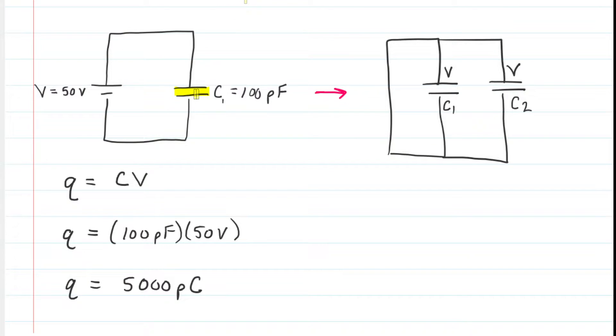We then take that capacitor, which we've labeled C1, and we move it into a new circuit. And this new circuit has another capacitor, C2, that's in parallel with that original capacitor.